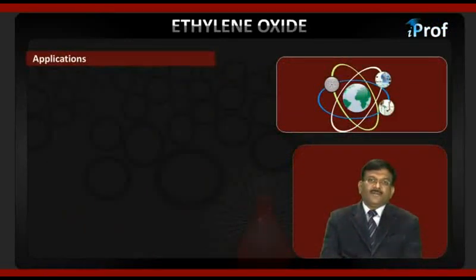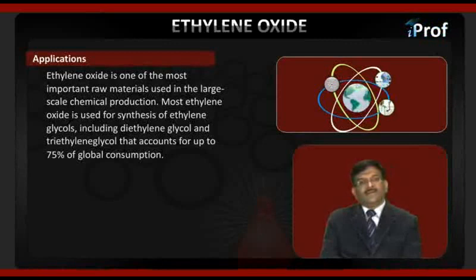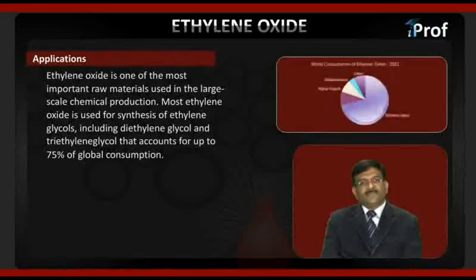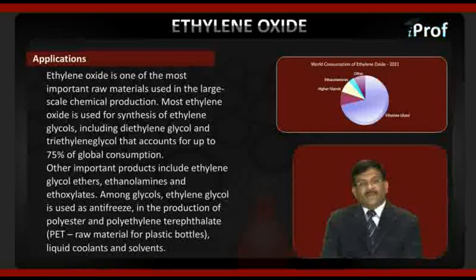Ethylene oxide is one of the most important raw materials used in large-scale chemical production. Most ethylene oxide is used for the synthesis of ethylene glycols, including diethylene glycol and triethylene glycol, which account for up to 75% of global consumption. Other important products include ethylene glycol ethers, ethanolamines, and ethoxylates.